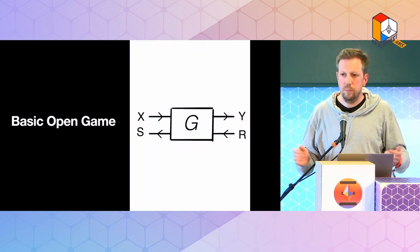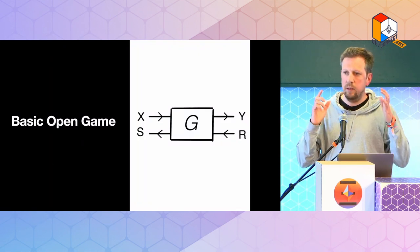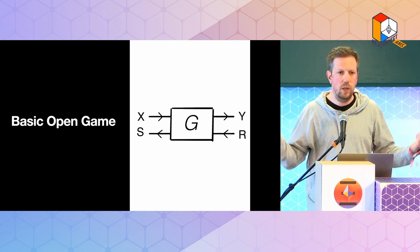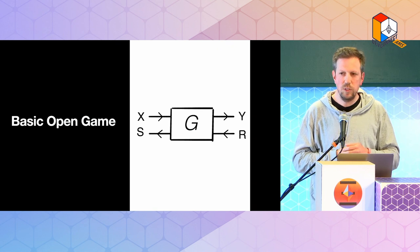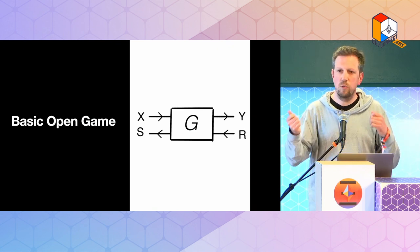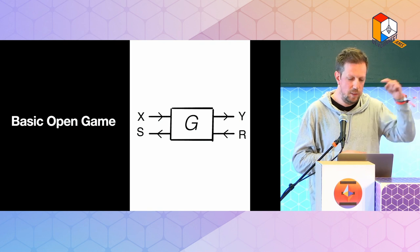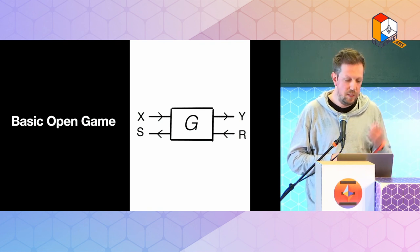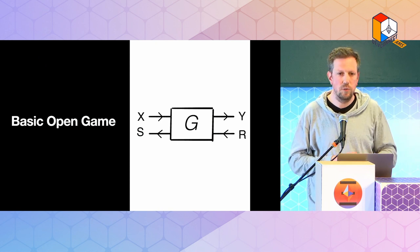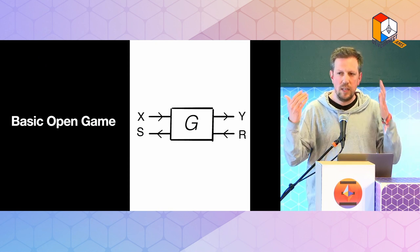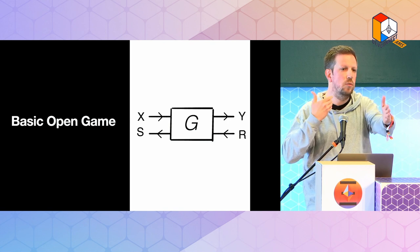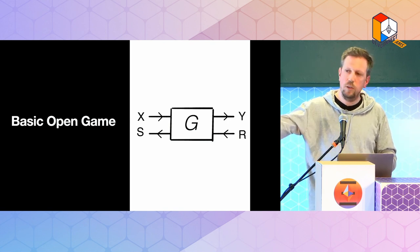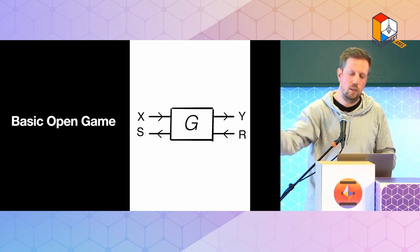This is the basic open game — think of it as a pipeline. Something goes in, something goes out. What's different from a normal pipeline is that information flows in both directions: X is an input from the left, R is an input from the right, Y is an output on one side, and S is an output on the other side. It's a bidirectional information process — something goes in from the left, and something comes from the right-hand side and goes back.